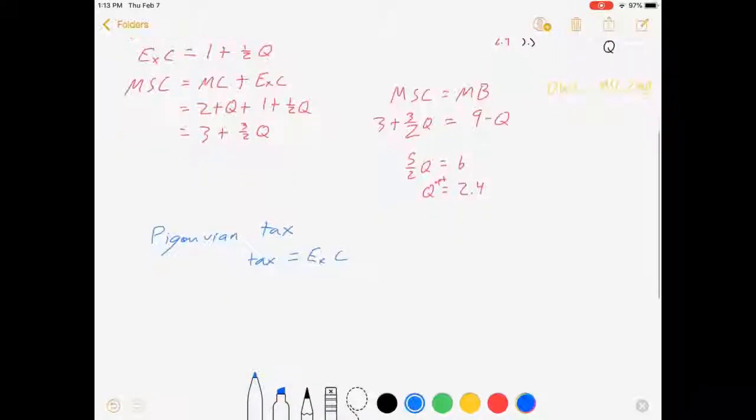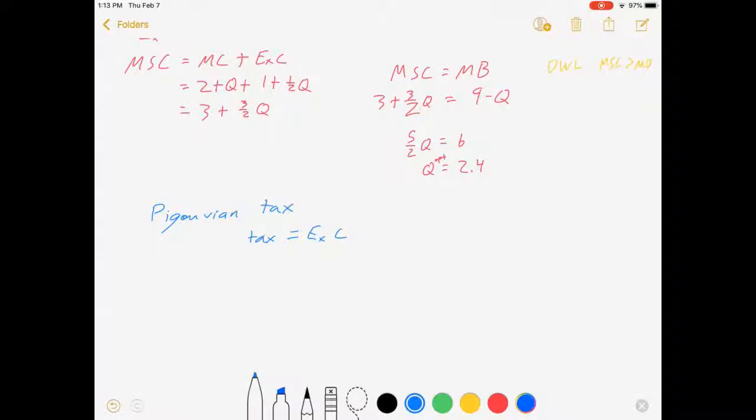So what does that look like in the math? Well, my Pigouvian tax is equal to 1 half Q plus 1. Well, we've already solved for the optimal Q. The optimal Q is 2.4.